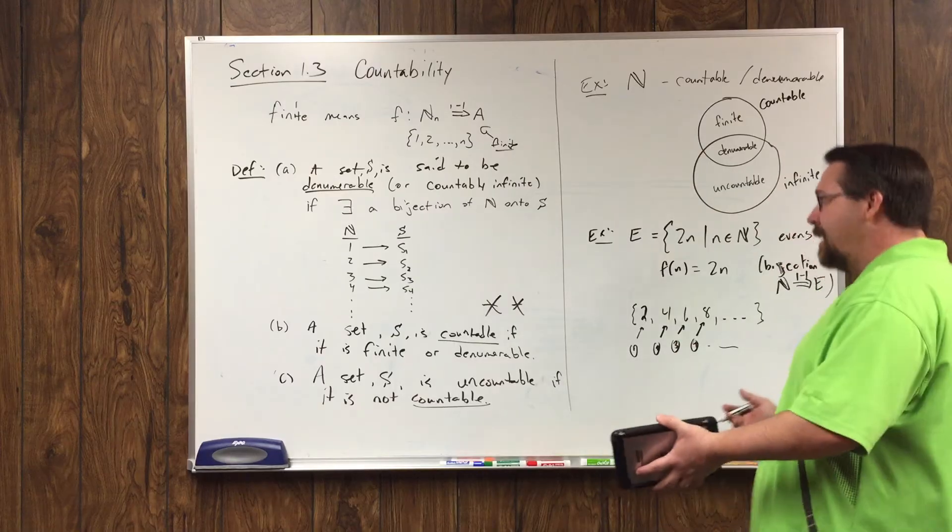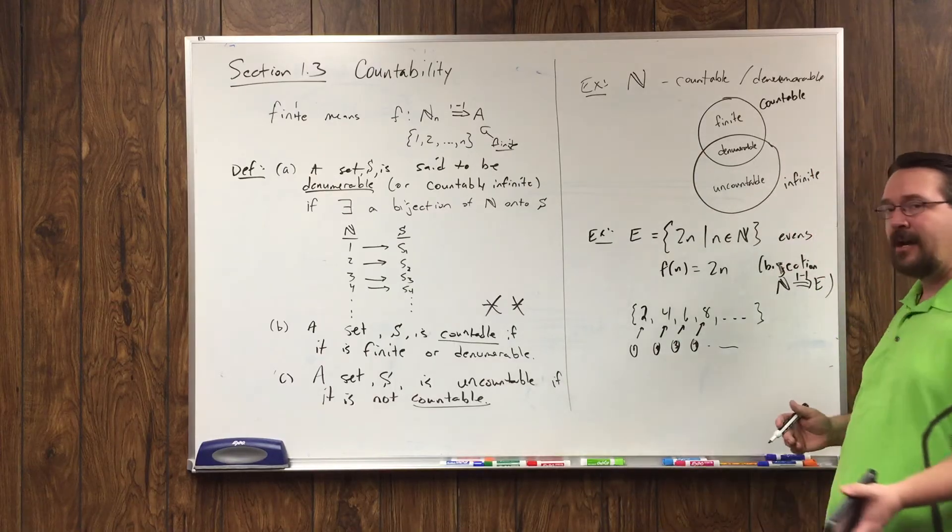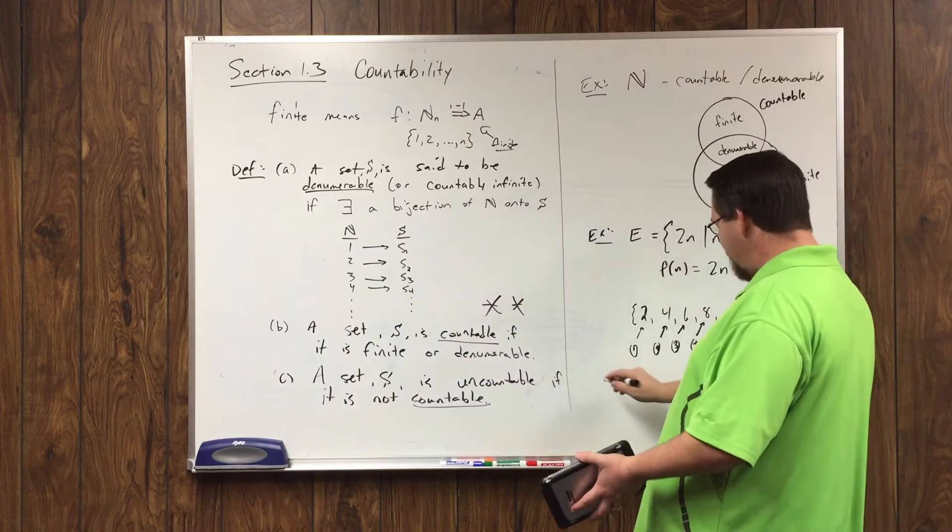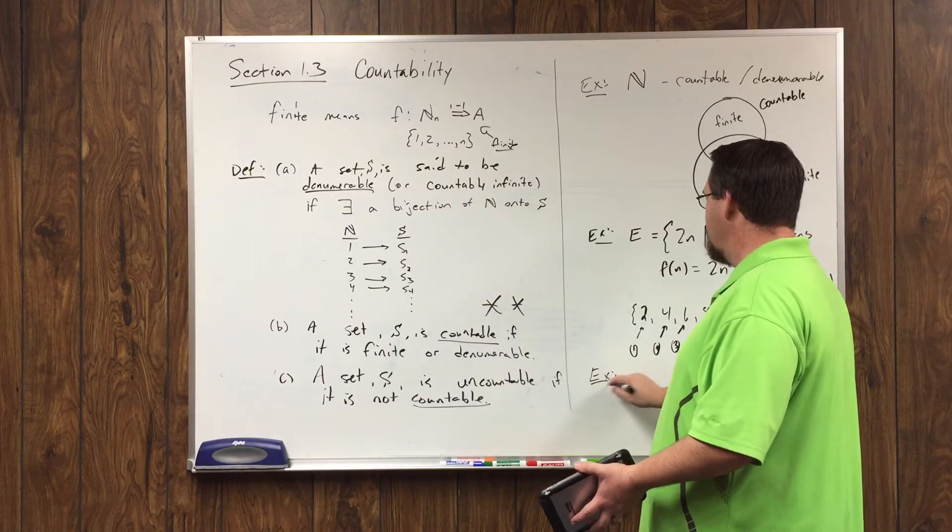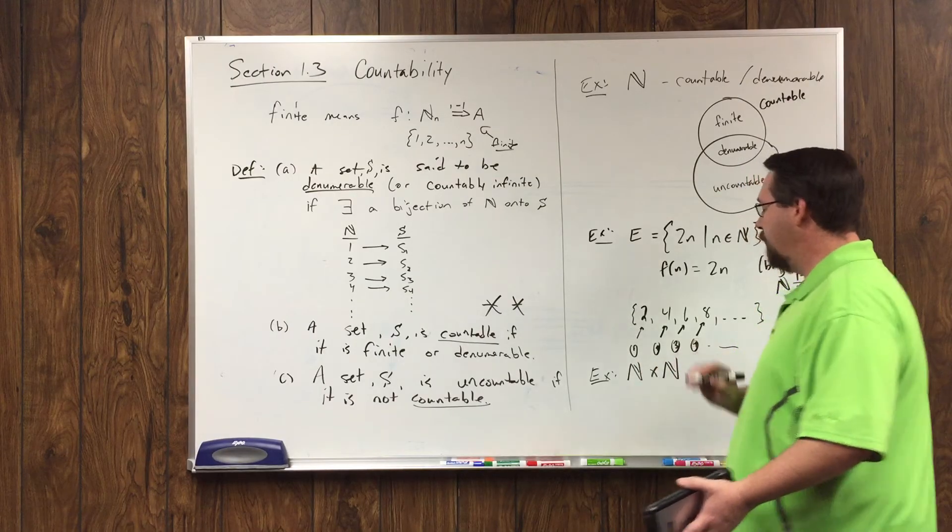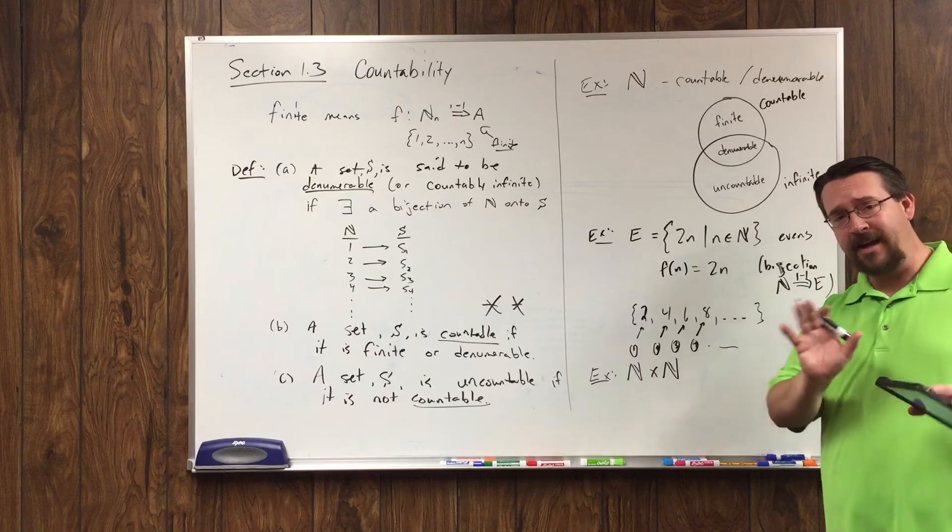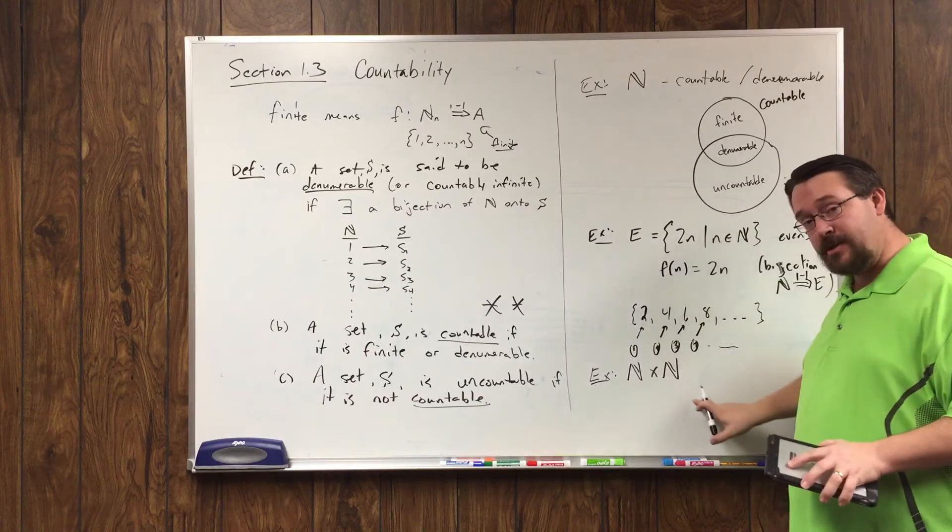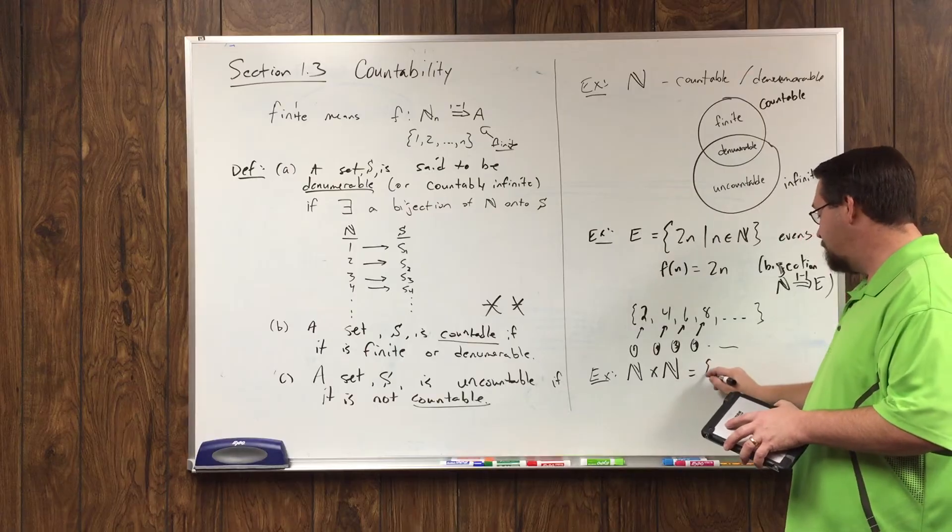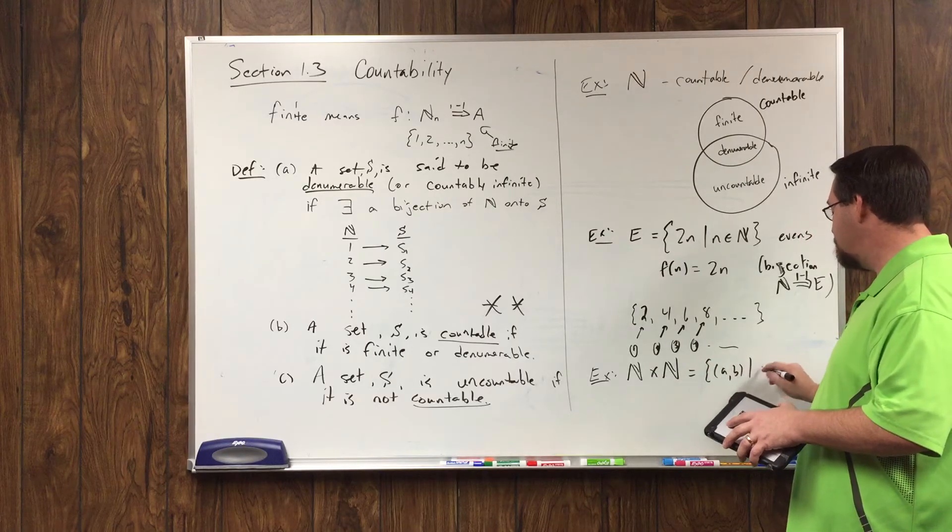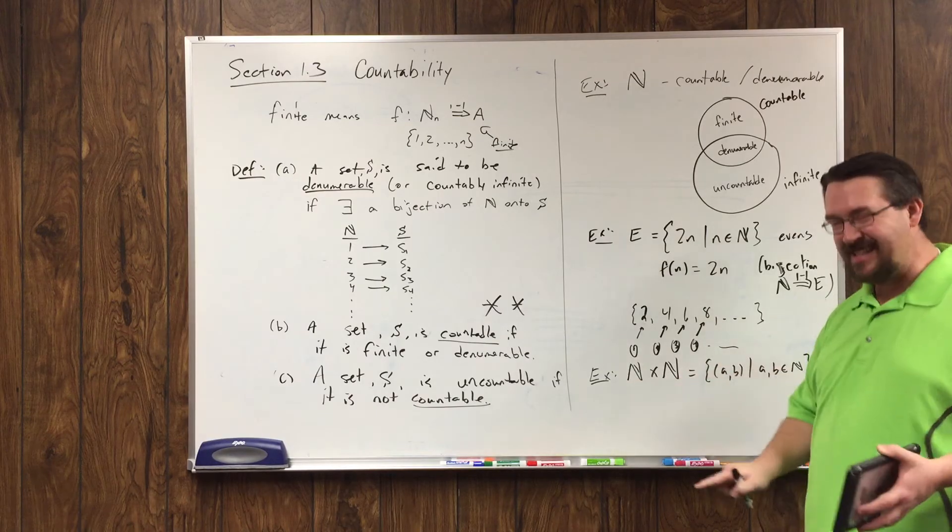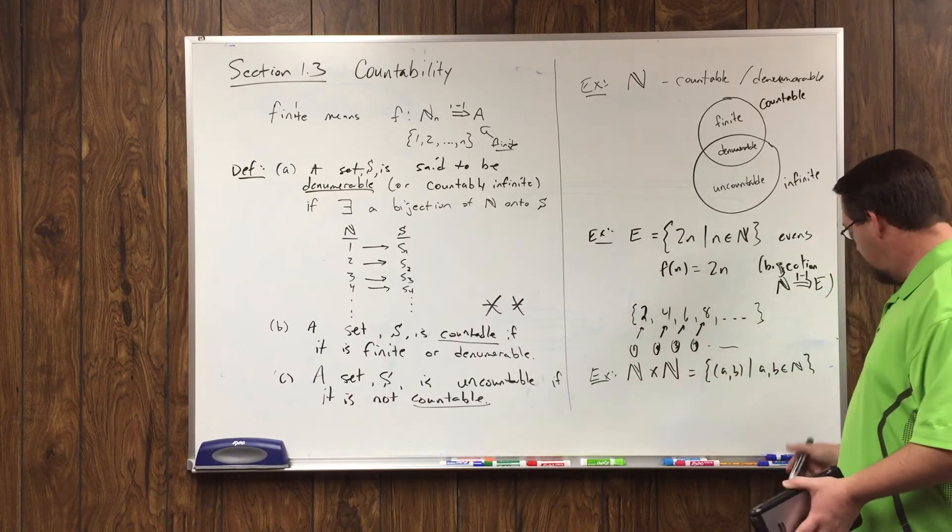Where things get a little bit tricky is that sometimes it may not look like you can come up with a list, but in fact you can by being creative. And I think I've got enough space down here to do this one. Consider this set right here, N cross N. Now N cross N, remember, is a Cartesian product. A Cartesian product means it's the set of all ordered pairs A, B, such that A and B are both natural numbers, since my first and second set are both N.